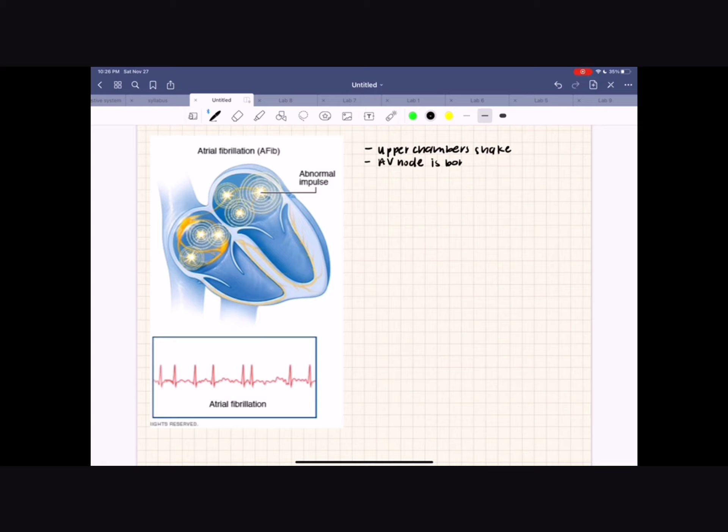Then, the AV node is bombarded with signals trying to get through to the lower ventricles. The atria are now out of sync with the ventricles of the heart as they cannot process all these signals quick enough, causing a fast and uncoordinated rhythm with the atria contracting faster than the ventricles. This makes it so the blood cannot be transported to the body properly.